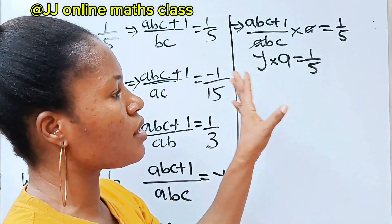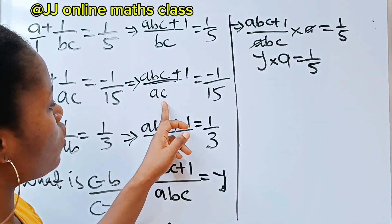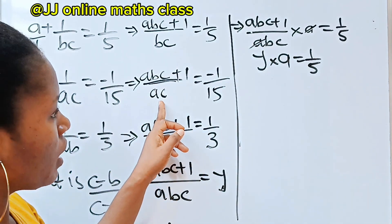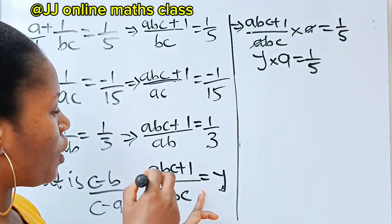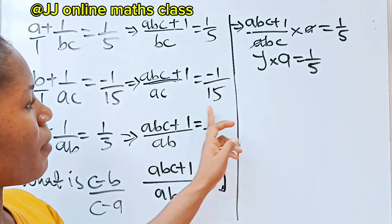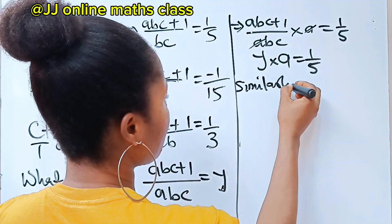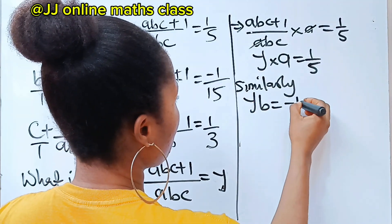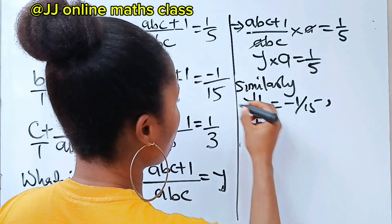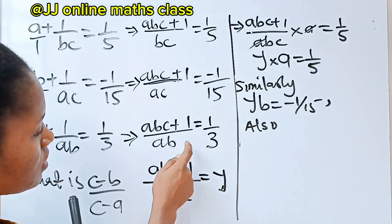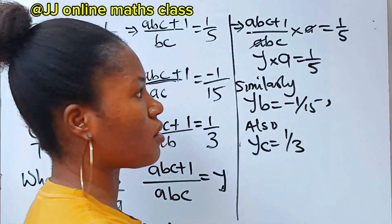Similarly, what we need for the second equation to complete the denominator as abc is b. So if we multiply y by b, we are going to get minus 1 over 15. And also, for the third equation, you are going to need c. So when you multiply y by c, you are going to get 1 over 3.